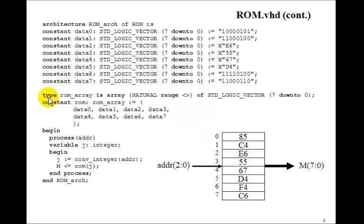Then we define a new type called ROM array. We say ROM array is array. This is an array type. Natural range less than, greater than means that the number of elements in this array are unknown, as they can be anything.